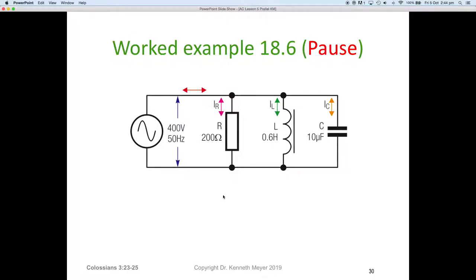We're going to jump into a quick example with that information. See if you can work out the values around this circuit. Pause the video. We've got 400 volts, 50 hertz, 200 ohms, 0.6 of a henry for the inductor, 10 microfarads for the capacitor. See if you can work out what the branch currents are and how they might relate to each other on a phase diagram. Remember, it's a pure resistor, pure inductor, and pure capacitor, so everything's either in phase or at 90 degrees out.